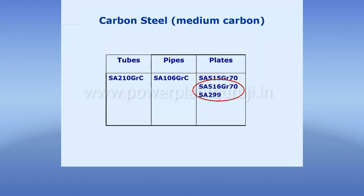Alloying elements like chrome, moly, vanadium, etc. Whenever the temperature exceeds 400 degrees centigrade — for example the LTSA primary superheater — these are all areas where the temperature will be in excess of 400 degrees centigrade, and we cannot use carbon steel there.